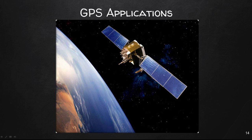GPS is an essential element of the global positioning information infrastructure. Its free, open, and dependable nature has led to the development of hundreds of applications affecting every aspect of modern life. GPS technology is now in everything from cell phones and wristwatches to bulldozers, shipping containers, and ATMs. GPS boosts productivity across a wide swath of the economy including farming, construction, mining, surveying, package delivery, and logistics supply chain management. Major communication networks, banking systems, financial markets, and the power grid depend heavily on GPS for precise timing synchronization.